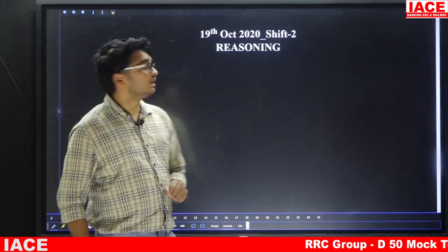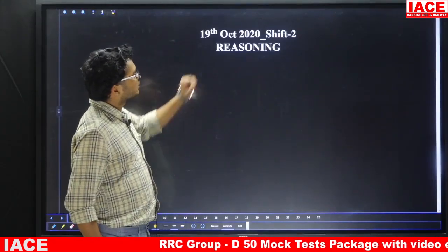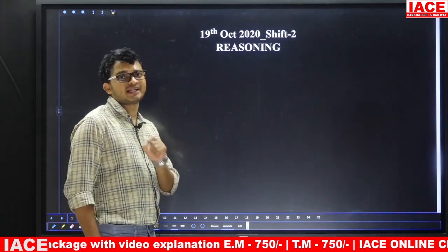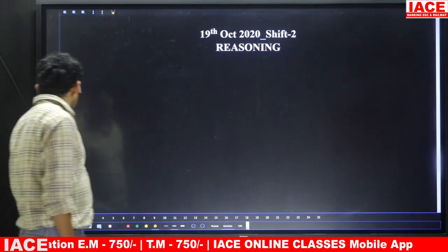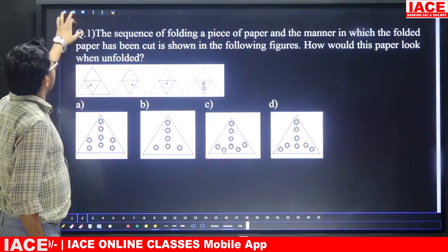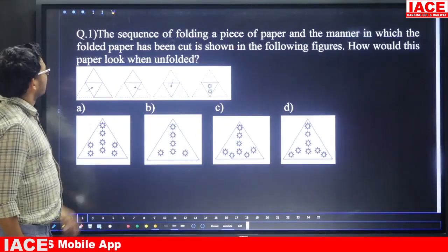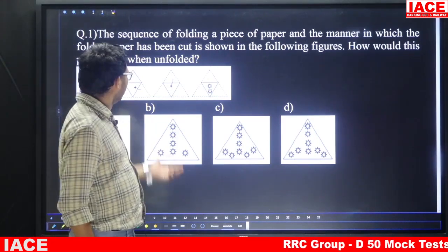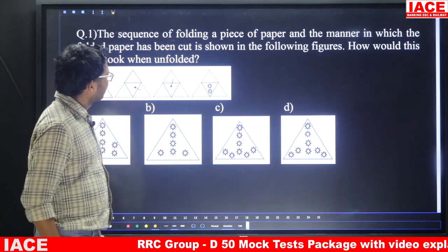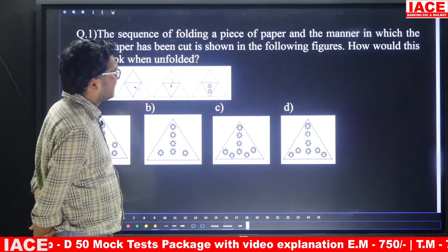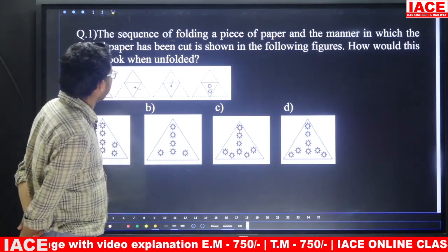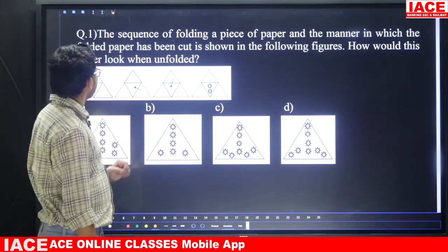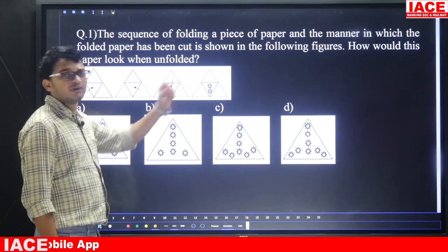Welcome to IAC. Today we are going to discuss the 19th October 2020 CHSL previous paper explanation. Question number one is from paper cutting and paper folding. The sequence of folding a piece of paper and the manner in which the folded paper has been cut is shown in the following figures. How would this paper look when it is unfolded?